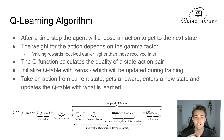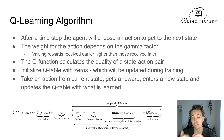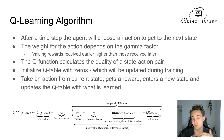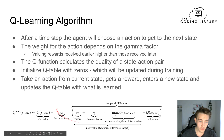In the Q-learning algorithm, after each time step the agent chooses an action to go to the next state. The weight for that action depends on the gamma factor defined in our Q-function. We value rewards received earlier higher than those received later, as controlled by the gamma discount factor.